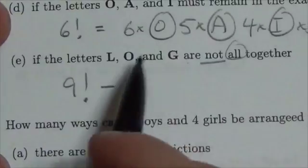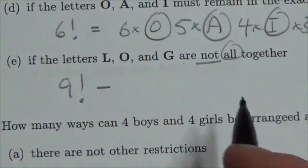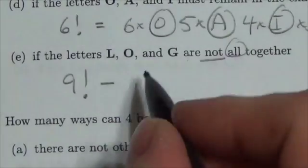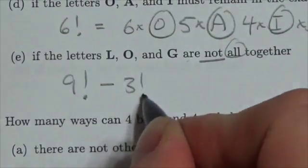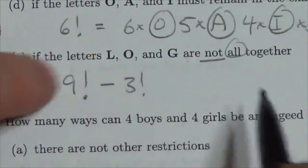So, what we're going to do here is we're going to come up with a number of permutations where L, O, and G are all together. Well, there are three letters, so that's going to give us three factorial, because that's the number of ways I can organize just that group of letters, L, O, and G.